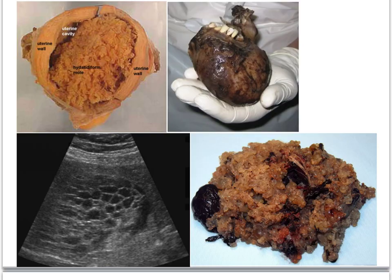Looking at images of hydatidiform moles, the upper left, lower left, and lower right images are complete hydatidiform moles, and the upper right is a partial mole. In the partial mole, we can see parts of a fetus present — teeth that have developed and a potential limb — reflecting the triploid karyotype of 69XXY. In the complete hydatidiform mole, we see a grape-like clustering mass. On the ultrasound in the lower left, we see a snowstorm pattern resembling a grid or grape-like mass. The upper left image shows the complete mole in relation to the uterus, filling the cavity — a rapidly dividing mass that can expand the uterus to larger than expected for gestational age.